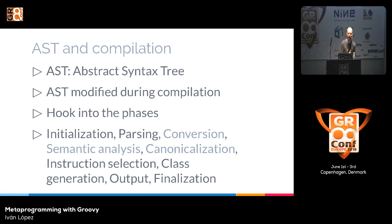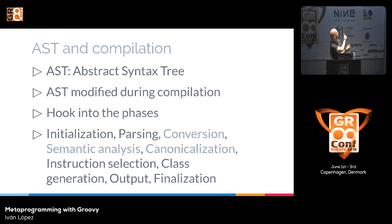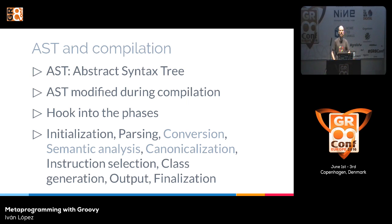Let's talk about AST — Abstract Syntax Tree. When the Groovy compiler compiles our code, it reads the code from the file and creates this in-memory tree. In the different compiler phases, it rearranges nodes, adds new nodes, removes nodes, and at the end converts the tree to the final bytecode. We can hook into these different phases. There are nine phases in the Groovy compiler — conversion, semantic analysis, and canonicalization are usually the ones you'll use most as an AST developer.